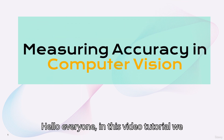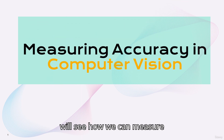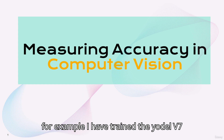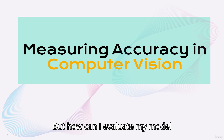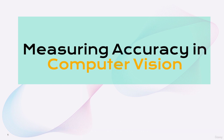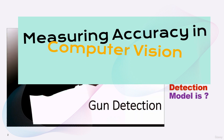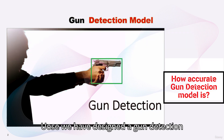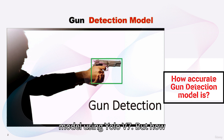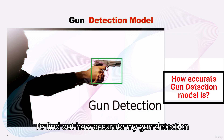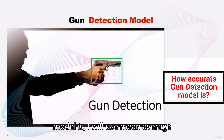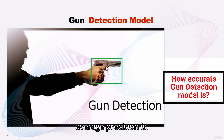Hello everyone. In this video tutorial, we will see how we can measure accuracy in computer vision. For example, I have trained the YOLOv7 model on a gun images dataset, but how can I evaluate my model? How will I know how accurate my model is? To find out how accurate my gun detection model is, I will use mean average precision. Let's see what mean average precision is.